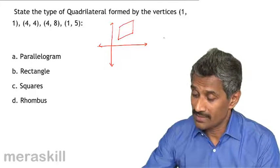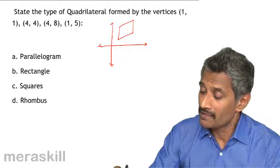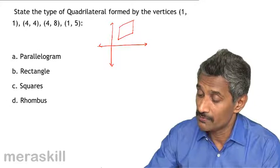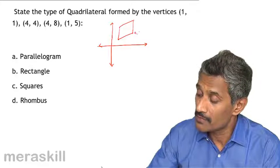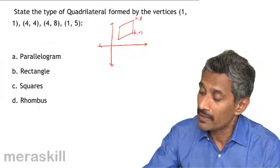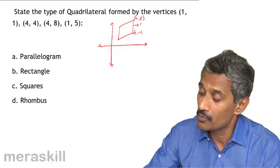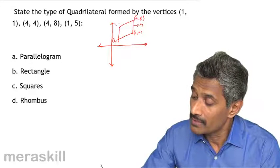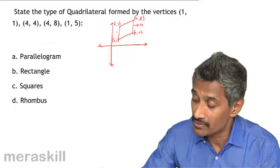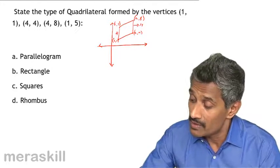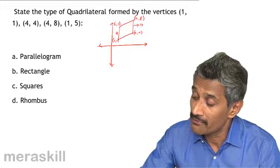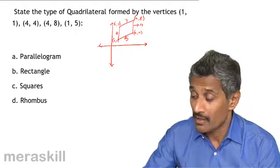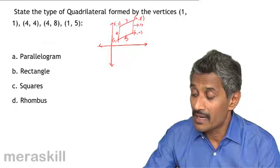You may not always be able to assess it visually, so find the difference in the y-coordinates. 8 minus 5 is 3. Between (4,4) and (4,8) the difference in y-coordinate is 4, and between (1,1) and (1,5) the difference in y-coordinate is also 4. That means opposite sides are equal. Similarly, the difference in x-coordinate is 4 minus 1, which is 3 on both sides — so opposite sides are equal.